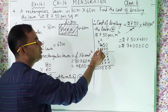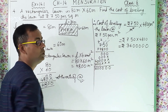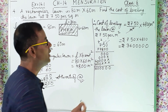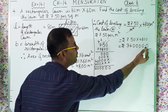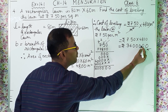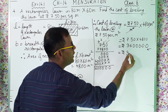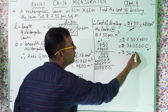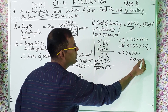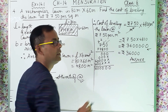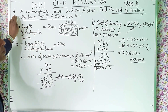Here you see, we are multiplying and there is a decimal point. After the point, how many digits are there? 1, 2 — two digits. So the point I have to put from the right side: after two numbers, the point comes here. So what you get is rupees 36,000. And this is the answer.